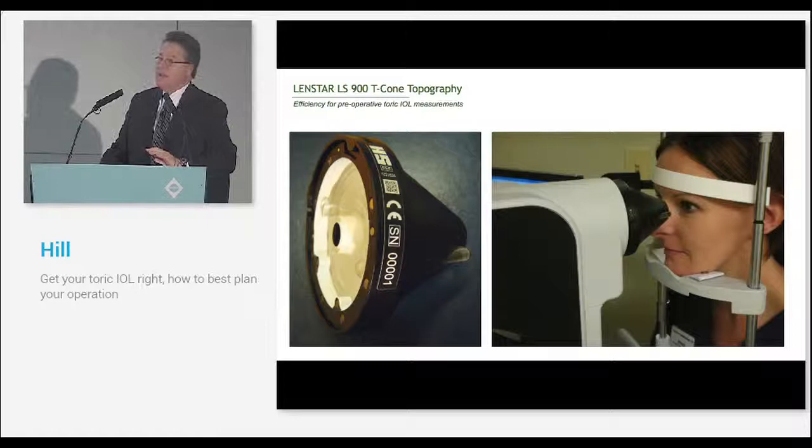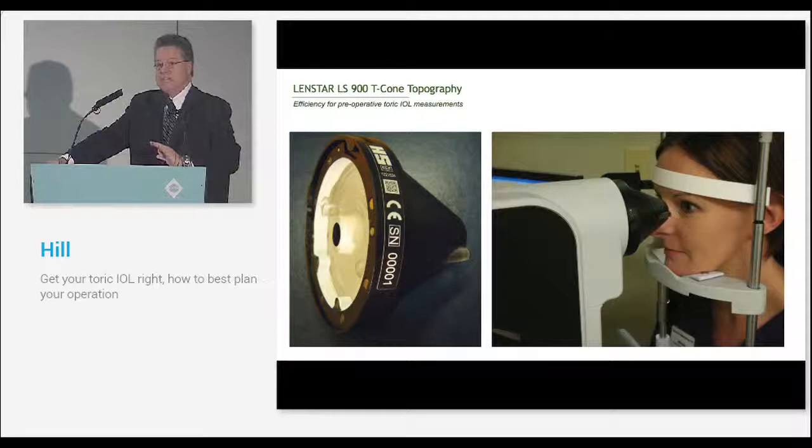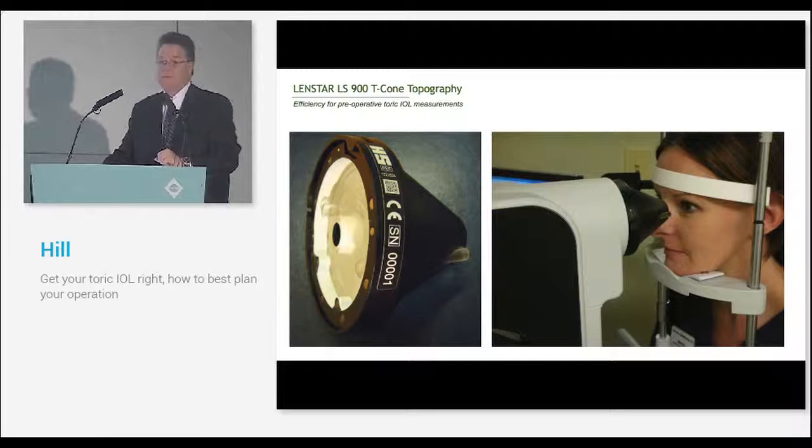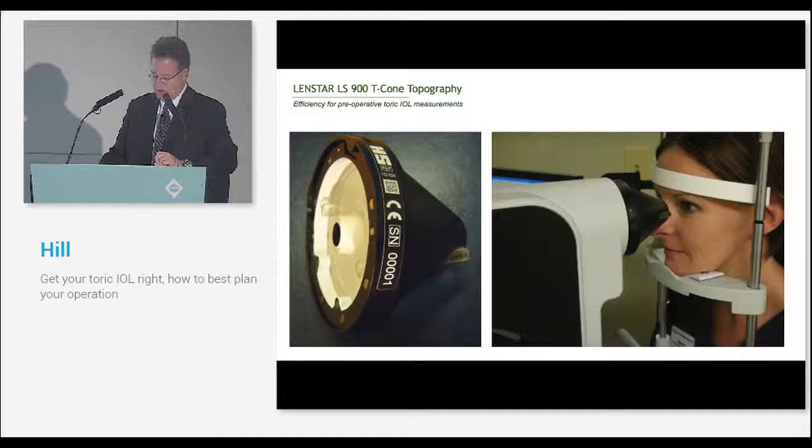The people at Haag-Streit added a T-Cone, which is actually a topographer. It's a Placido topographer, not unlike what you use with, say, the Zeiss Atlas topographer. It looks like this. This was validated against the Zeiss Atlas topographer, and that's basically an industry standard. The accuracy is within a quarter diopter of the topographer, and it has the right number of Placido rings.